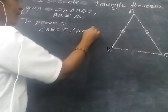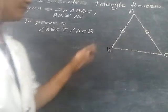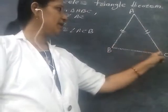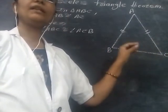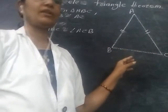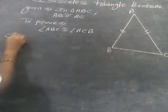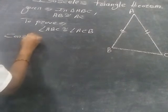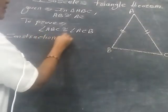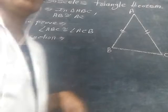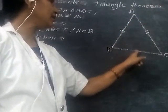Now for this, if we want to prove that these two angles — that is, these base angles — are congruent, we need to construct something. So we write here: Construction. What is our construction? We draw here an angle bisector. We draw here an angle bisector for this angle.